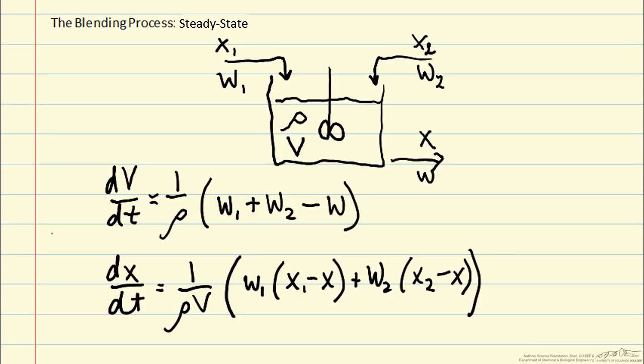Often we're interested in the steady state of a system, which is usually where we would want to operate our process. And at steady state, nothing is changing, so we can set all time derivatives to zero. When we're operating at steady state, then we have steady state conditions for our variables that are usually time varying. And we use the overbar on these variables to denote the steady state values.